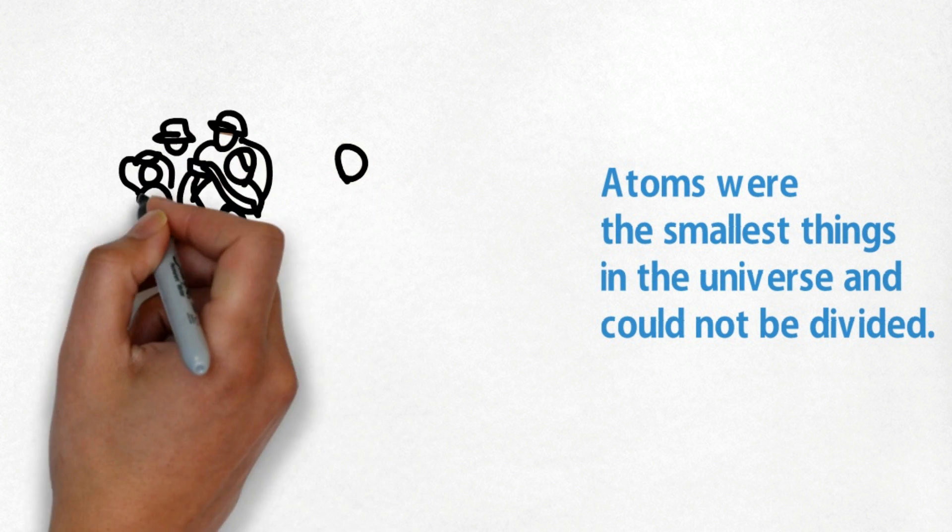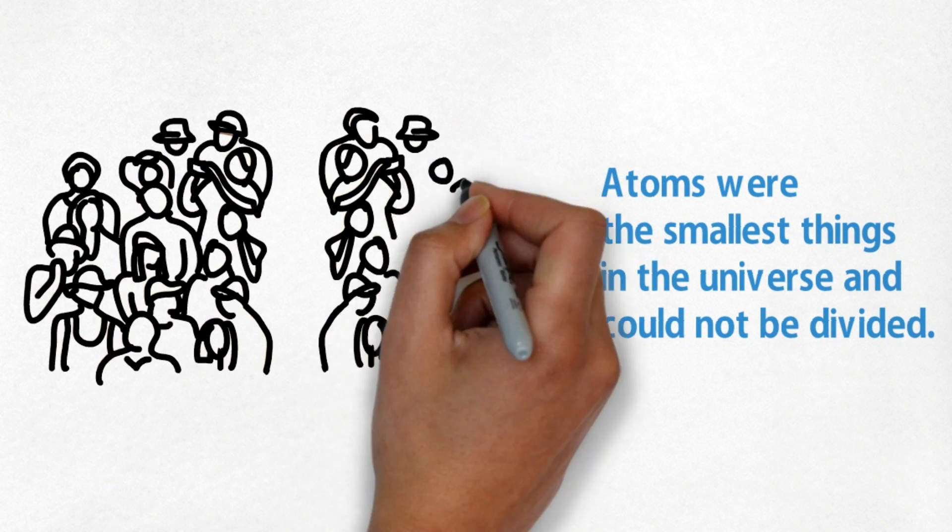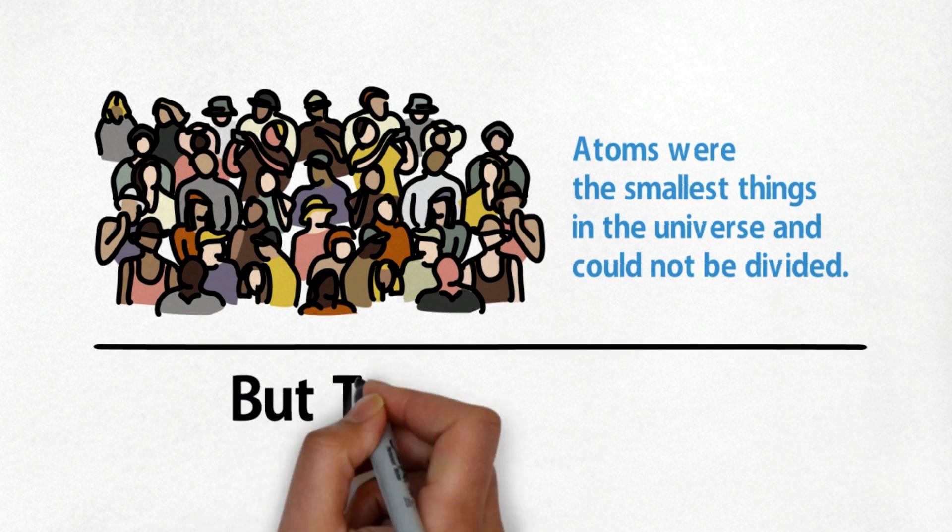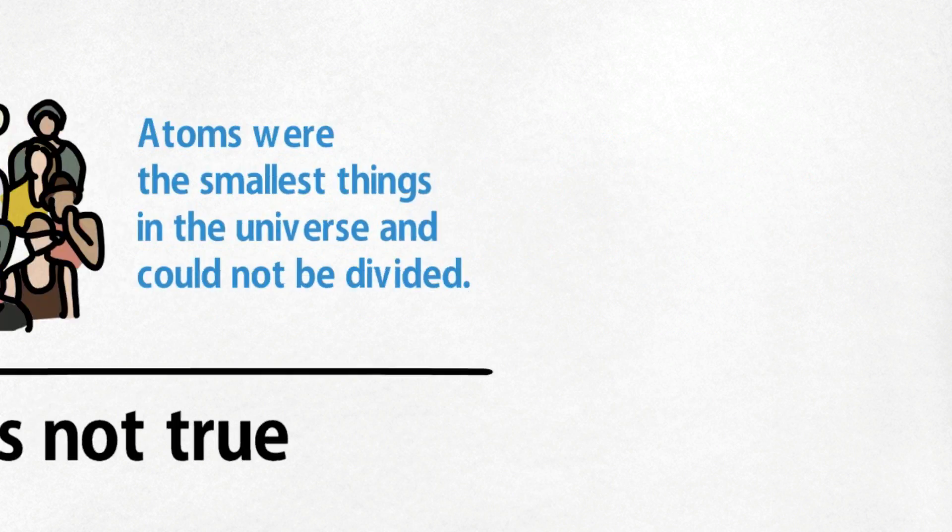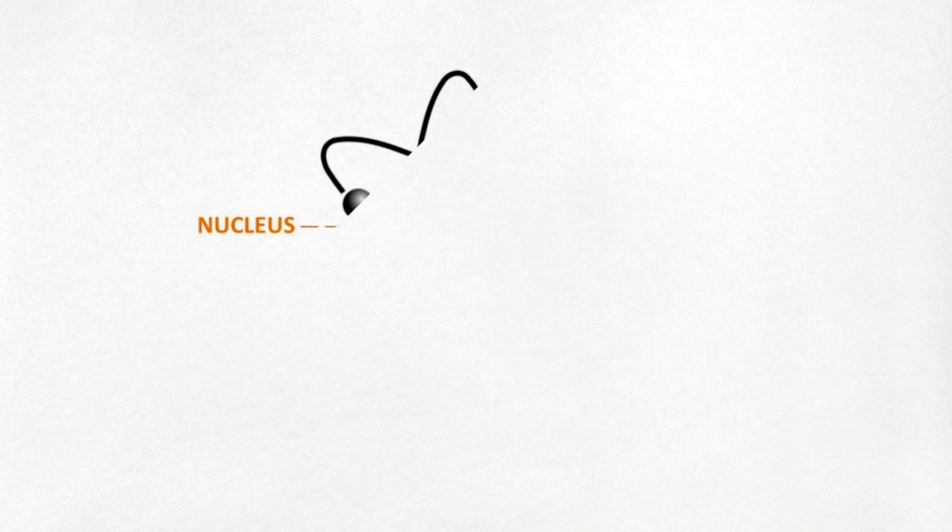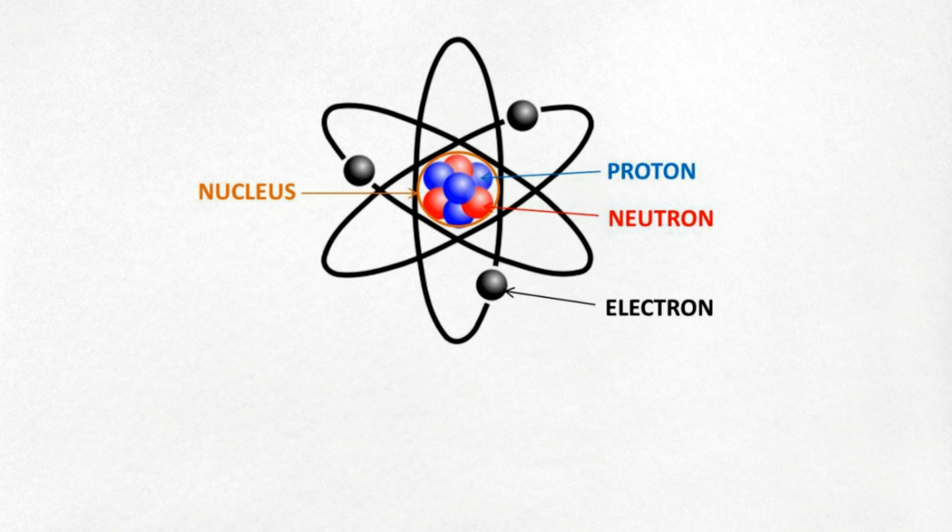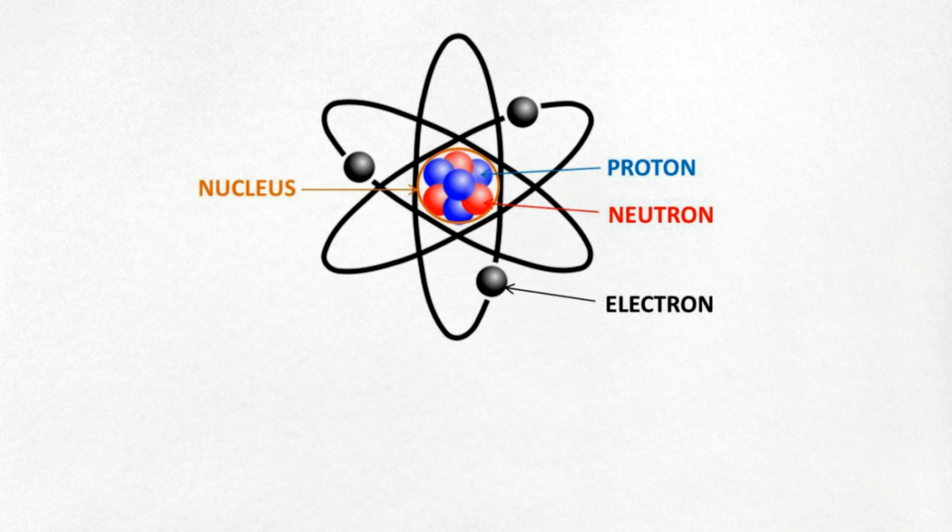As you know, atom is not indivisible, but people once thought that atoms were the smallest things in the universe and could not be divided. But this is not true. We know that atoms are made up of three particles: protons, neutrons, and electrons, which are composed of even smaller particles such as quarks.